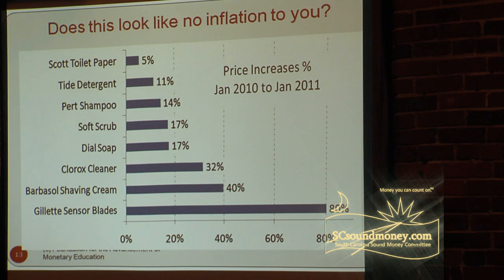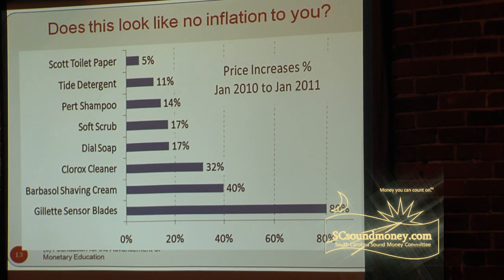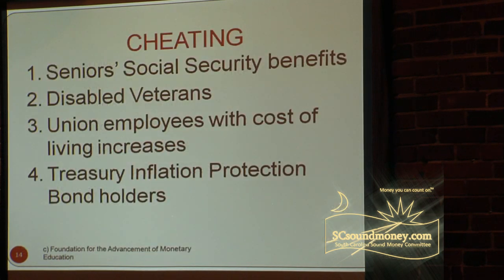Toilet paper up five percent, laundry detergents up eleven percent, shampoos up fourteen percent, all the way up to razor blades up eighty percent. These are not labor-intensive products — they're machine-intensive. So this notion that inflation is negligible is a flat-out lie.